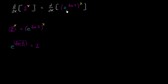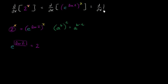We know from our exponent properties: if we raise something to some power and then raise that to another power, we can take the product of the two powers. That is, a to the b, raised to the c power, equals a to the b times c. We can utilize that exponent property here to rewrite this as the derivative with respect to x of e to the natural log of 2 times x.